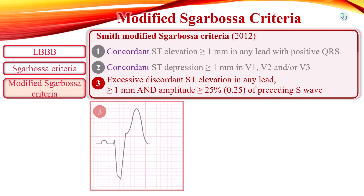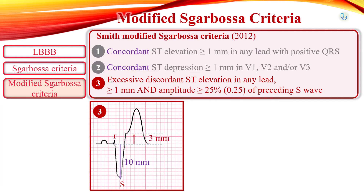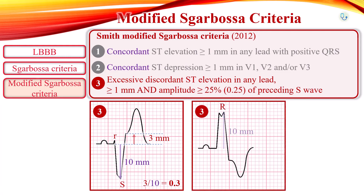For example, in one figure there is a small R wave and prominent S wave. The depth of the S wave is 10 mm and the ST segment elevation is 3 mm, giving an ST-to-S ratio of 0.3, which meets the third criterion. In another figure, the amplitude of the notched R wave is 10 mm and the ST segment depression measures 3.5 mm, giving a ratio of 0.35, which also fulfills the third criterion.